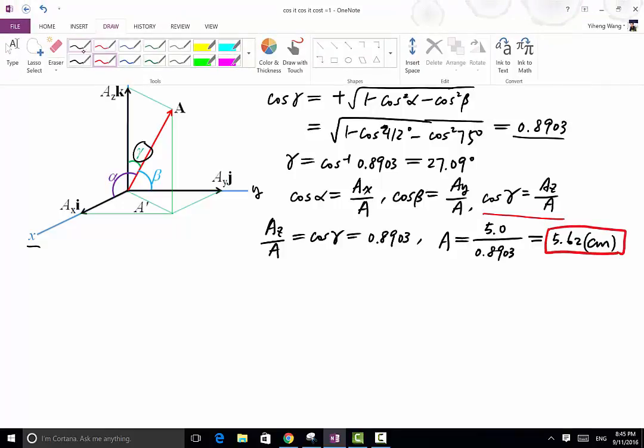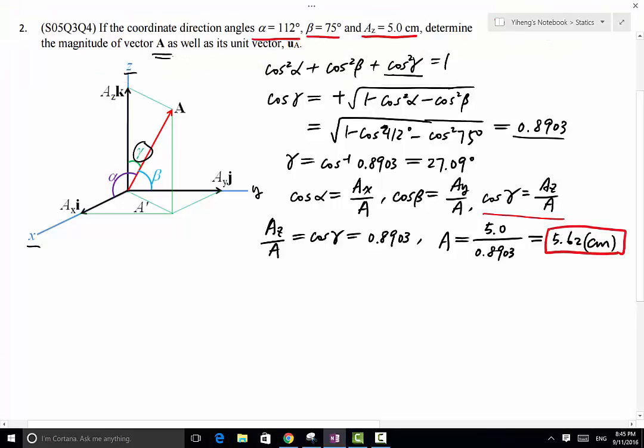So that answers the first question, what is the magnitude of vector A. So for the unit vector uₐ, there are different ways to do this, the easiest way is to recognize that uₐ vector simply equals to cosine alpha i plus cosine beta j plus cosine gamma k.